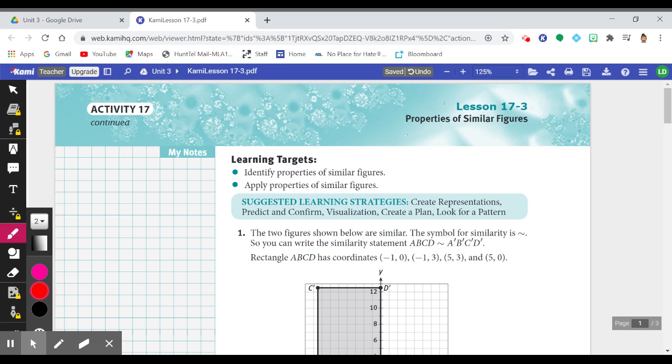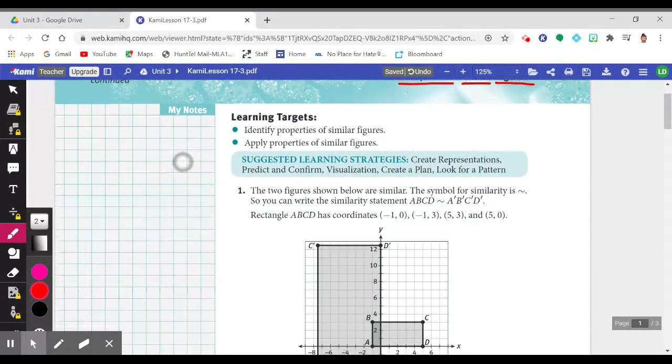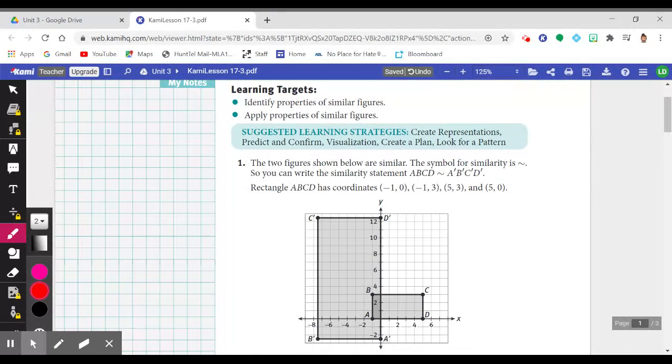Hello and welcome to Lesson 17-3. We're actually on our last lesson of Activity 17. We've been looking at similarity transformations and how that's a little bit different than our congruence transformations. In this lesson, we're going to study the properties of similar figures. Just think about that word, what similar means in regular context, and we'll see how it applies in geometry.